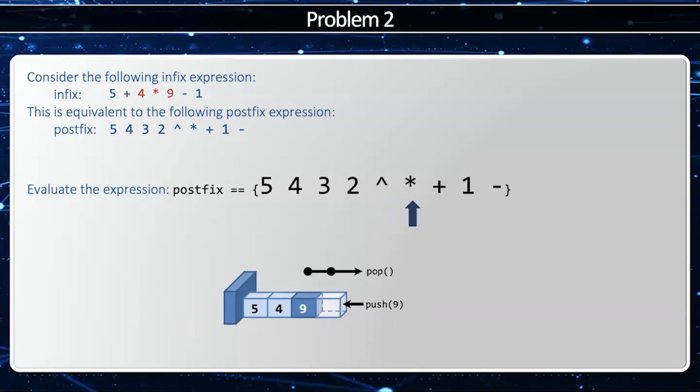Now we have multiply. So that corresponds to 4 * 9. And 4 * 9 will become 36. So I'll take those off the stack. And then we have plus, and that's the 5 + 36. And I'm going to evaluate that and turn it to 41 and push it on the stack.